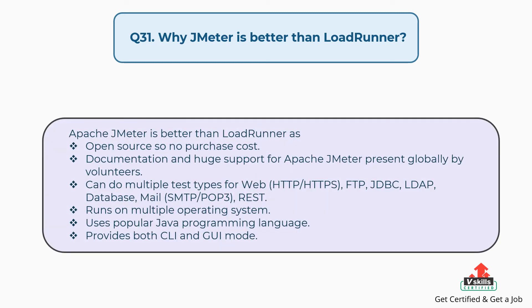Question 31: Why is JMeter better than LoadRunner? Apache JMeter is better than LoadRunner because it is open source with no purchase cost, has documentation and huge global support from volunteers, can do multiple test types (HTTP/HTTPS, FTP, JDBC, LDAP, database, SMTP/POP3, REST), runs on multiple operating systems, uses Java, and provides both CLI and GUI modes.